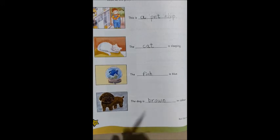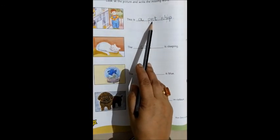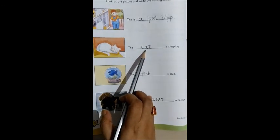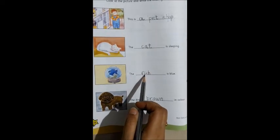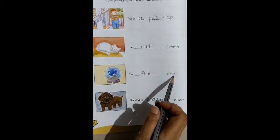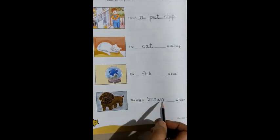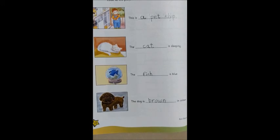So, can we read these sentences once more? Now, this is a pet shop. The cat is sleeping. The fish is blue. The dog is brown in color. So, this way you will be completing page 24 in your Little Thinker English. Moving on to the next page.